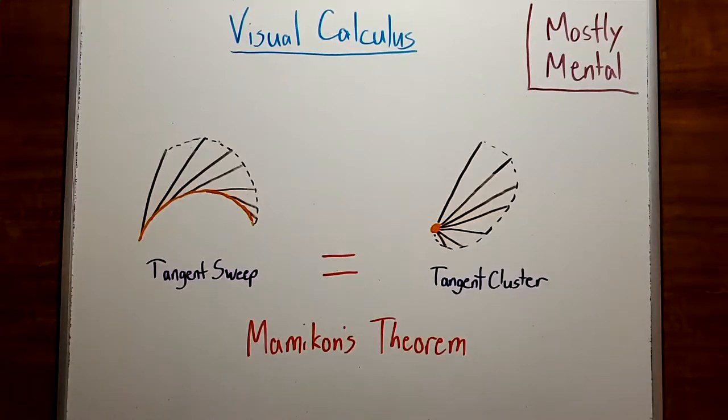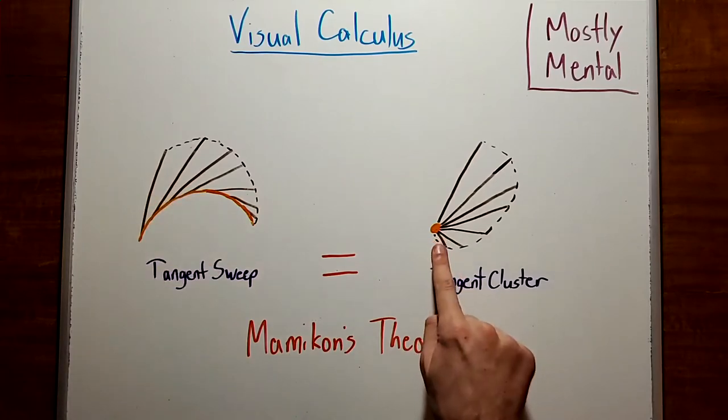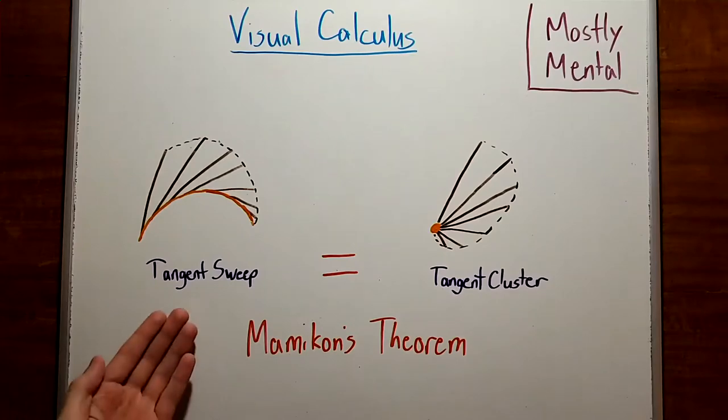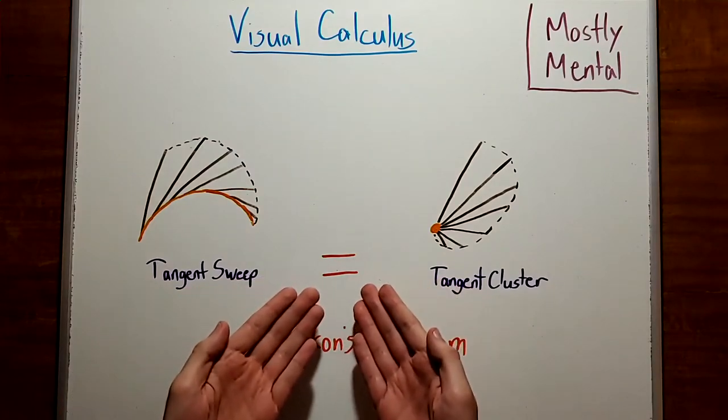So to recap, what have we learned today? If you have a region swept out by tangents to a curve, we can bring those tangents together at a point without changing the area. That is, the tangent sweep and the tangent cluster have the same area.